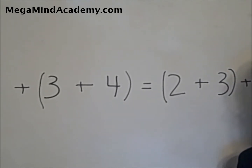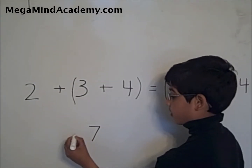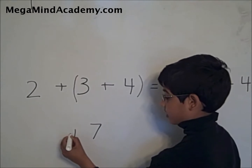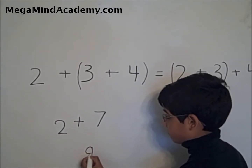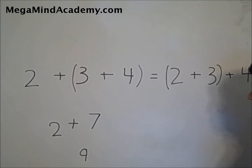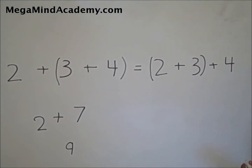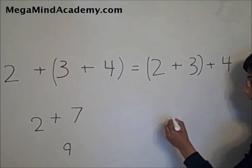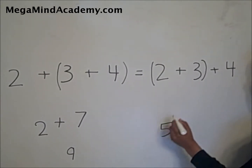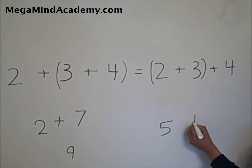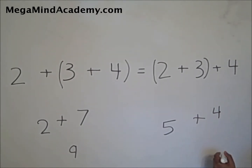Three plus four equals seven. Plus two equals nine. Two plus three equals five. Plus four equals nine.